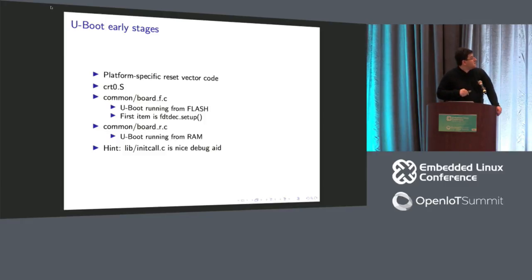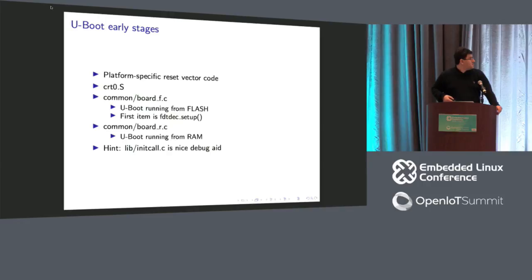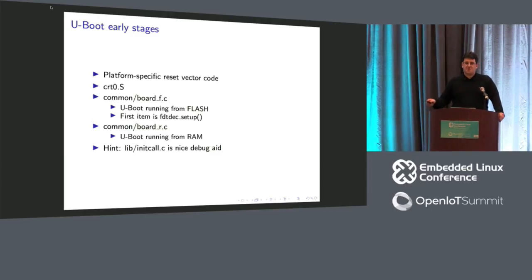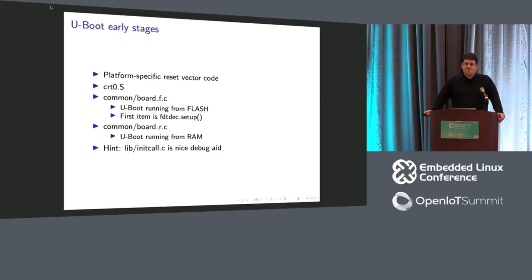One of the first functions in board_f.c sets up access to the flattened device tree blob — so very early in C code, device tree access is available. If you are ever debugging the U-Boot init process, look at lib/initcall.c which contains two debug statements. If you replace them with printf, U-Boot will print a list of every single init call it makes. So if U-Boot hangs somewhere in the init sequence, you'll know exactly which was the last completed init call.